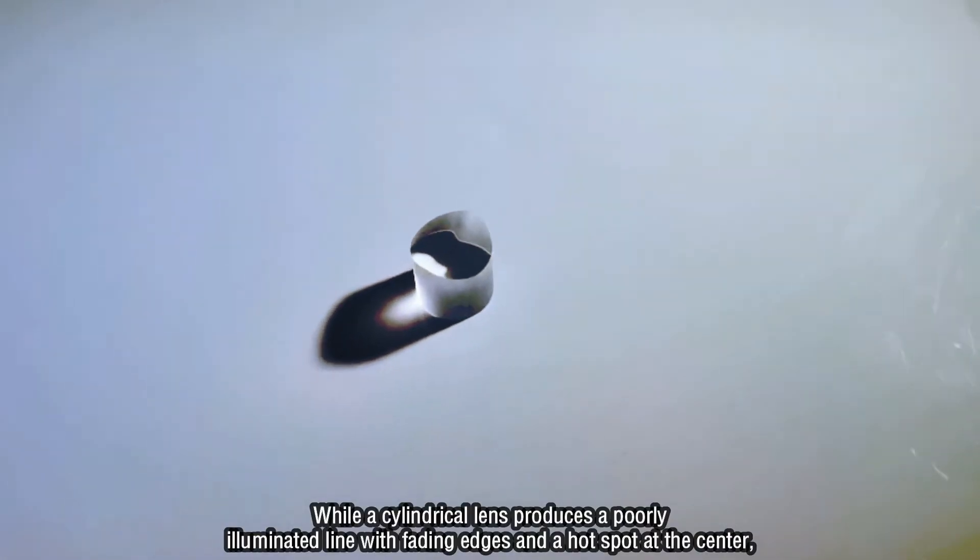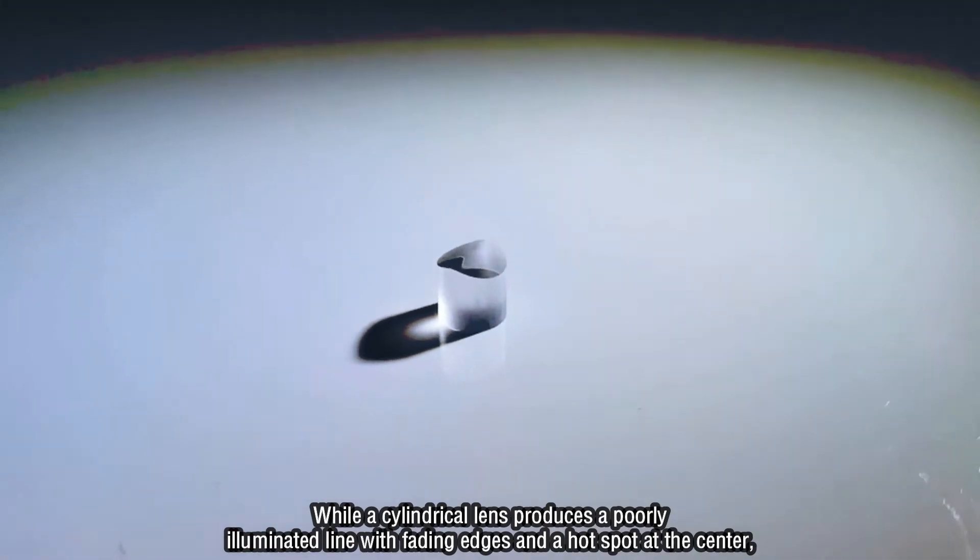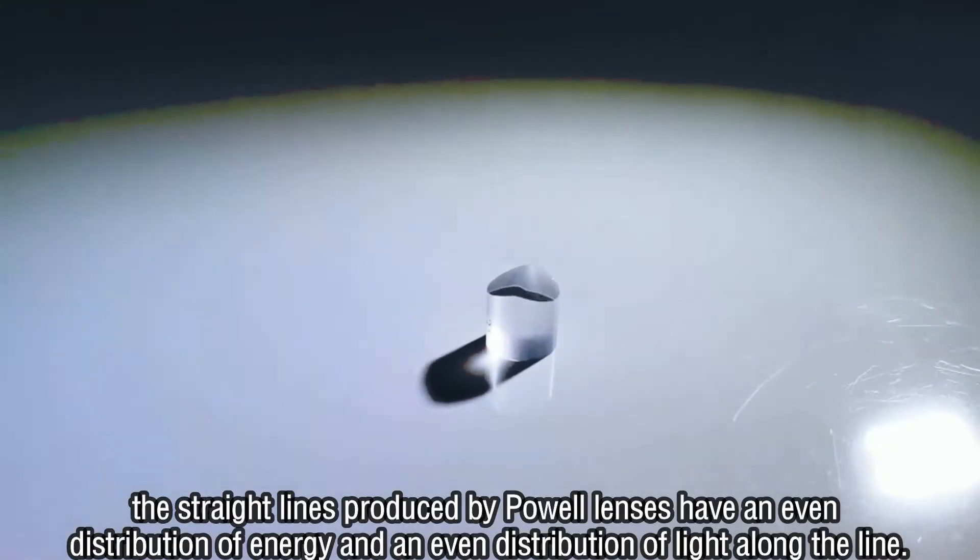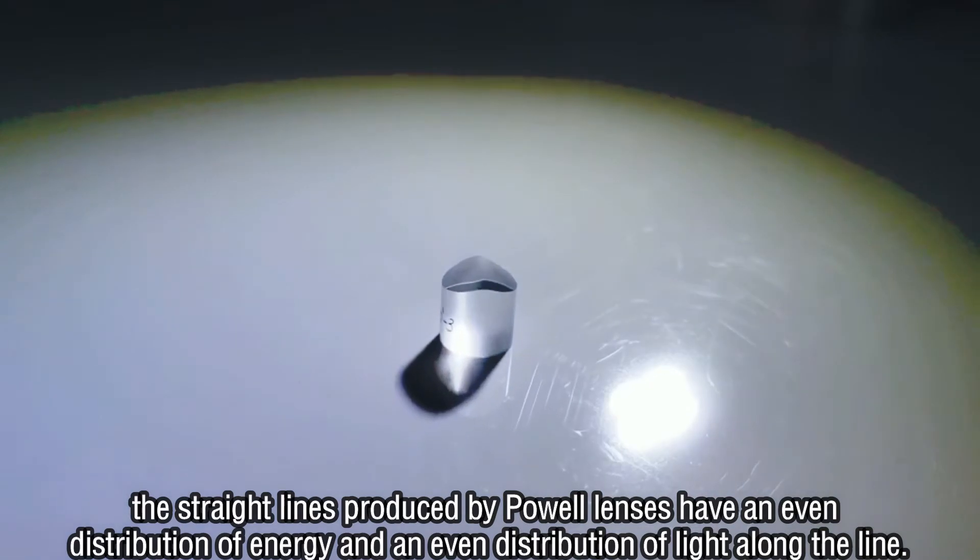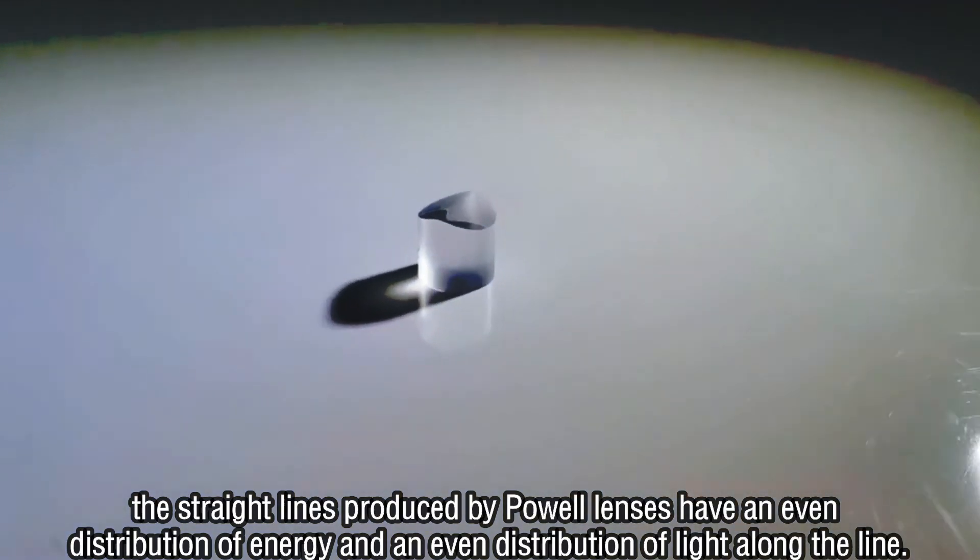While a cylindrical lens produces a poorly illuminated line with fading edges and a hot spot at the center, the straight lines produced by Powell lenses have an even distribution of energy and an even distribution of light along the line.